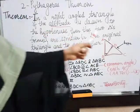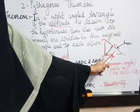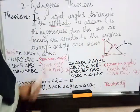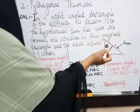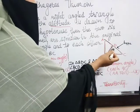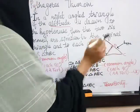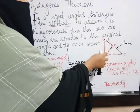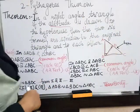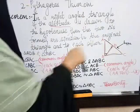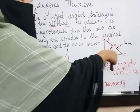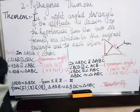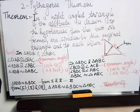And they are also similar to each other. So triangle ADB is similar to triangle ABC (the original), and triangle BDC is also similar to triangle ABC. Now let's move to the proof.